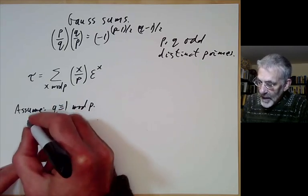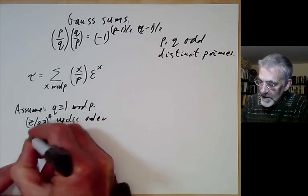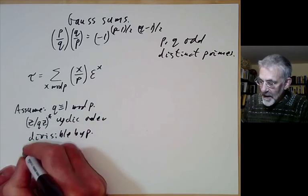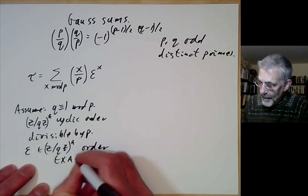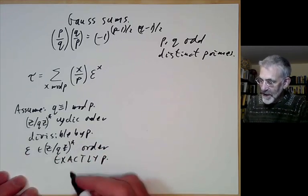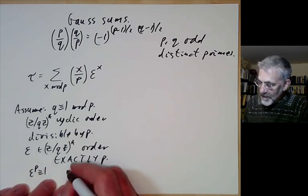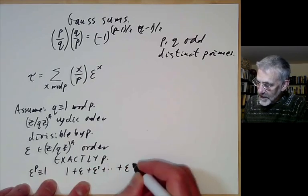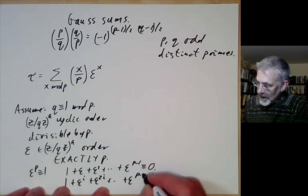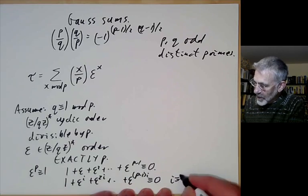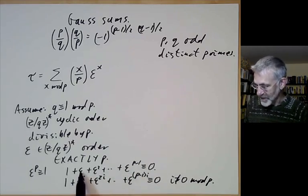This means that the integers modulo q under multiplication — which are cyclic — have order divisible by p, and this means there is an element epsilon in (Z/qZ)* of order exactly p. You can think of epsilon as being a p-th root of 1, so epsilon^p is congruent to 1 mod q. Since epsilon is not 1, we also find that 1 + epsilon + epsilon² + … + epsilon^(p−1) is congruent to 0, and more generally, the sum 1 + epsilon^i + epsilon^(2i) + … + epsilon^((p−1)i) is congruent to 0 for i not congruent to 0 modulo p.